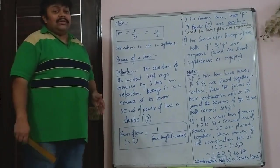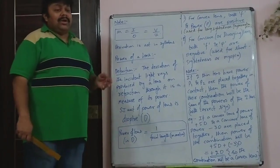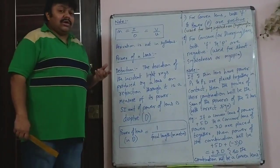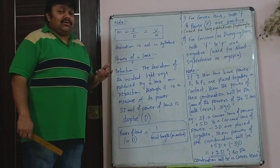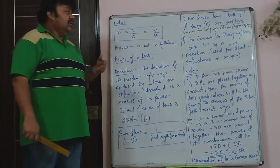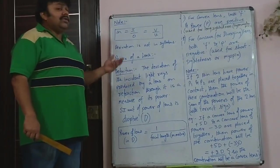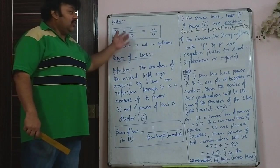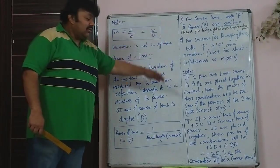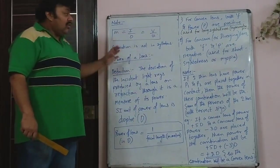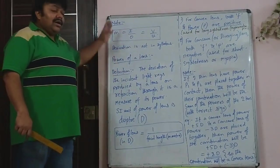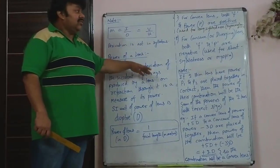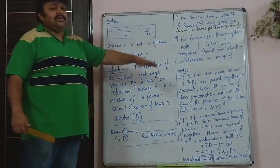For two thin lenses placed together as a combination, if they have individual powers P1 and P2, the power of the combination is the sum of the individual powers with their correct signs. For example, a convex lens of plus 5D and a concave lens of minus 3D together give a combination power of plus 2D — behaving as a convex or converging lens with net power 2D. That is all about the theory part of lens. In the next session, we will do sums and numericals based on lenses. Copy all this and learn it before doing the sums.